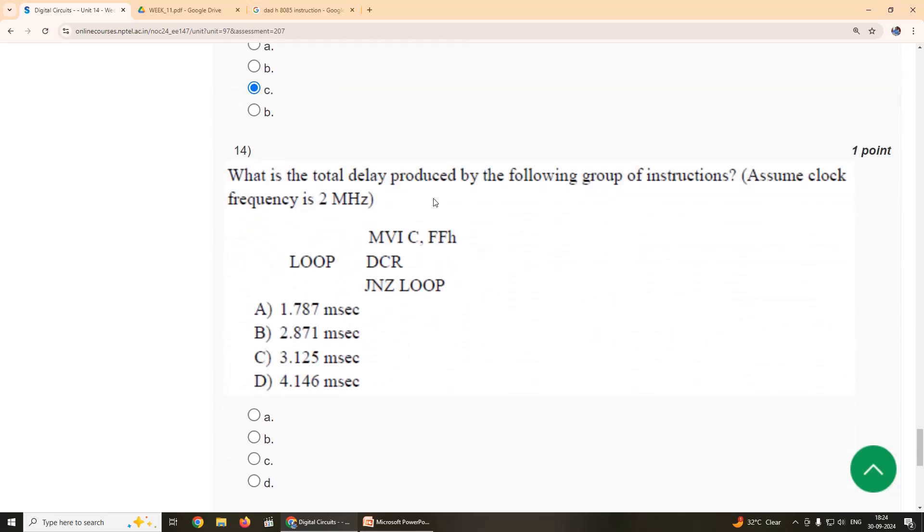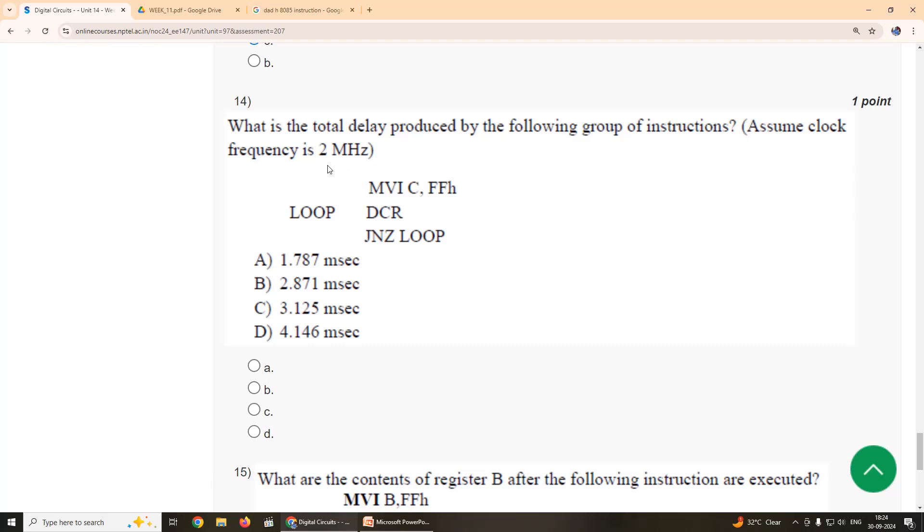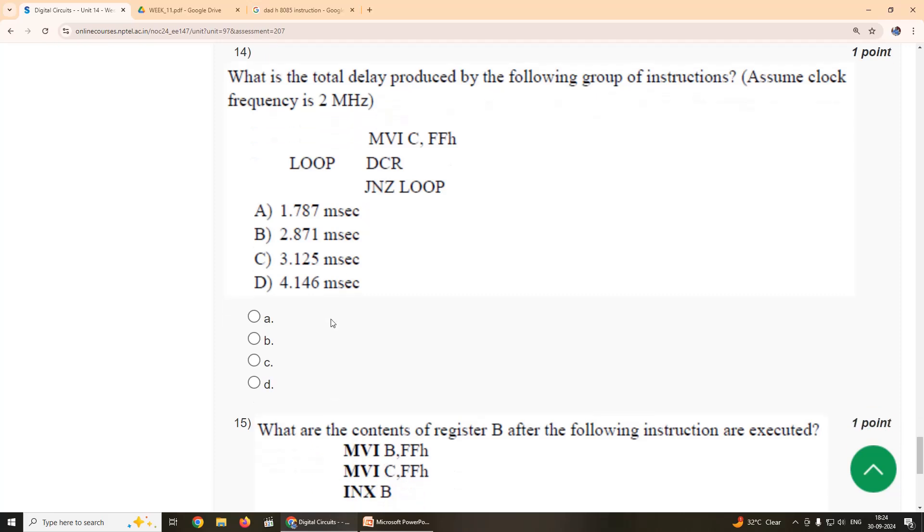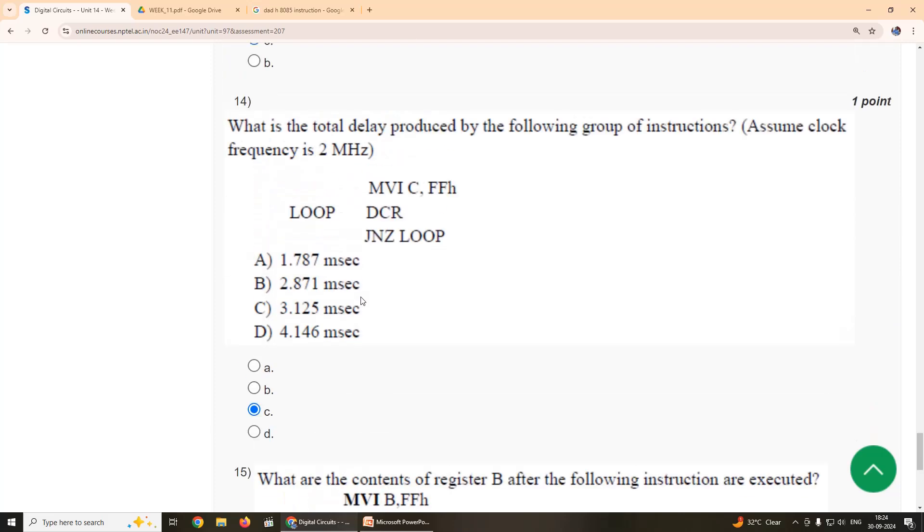Fourteenth: What is the total delay produced by the following group of instructions? Assume clock frequency is 2 MHz. And this 2 MHz will be internally divided by 1 MHz. So the 8085 will be running with 1 MHz clock frequency. The exact value is 3.574 milliseconds. The answer is not an approximate answer. According to us, suggestion is option C. I think they have made some mistake. We will clarify this with them.